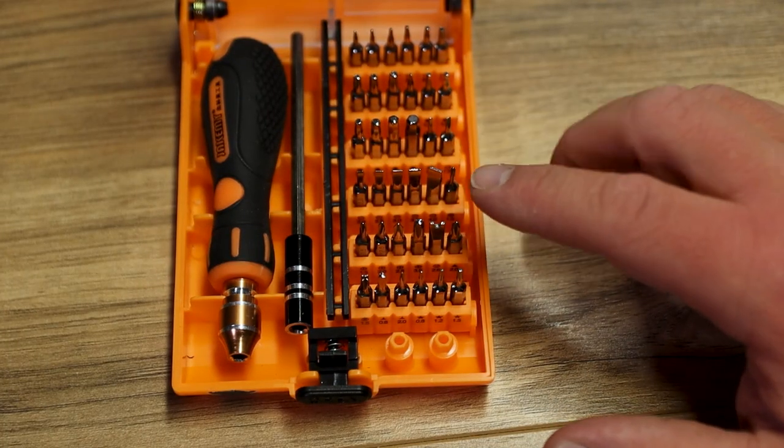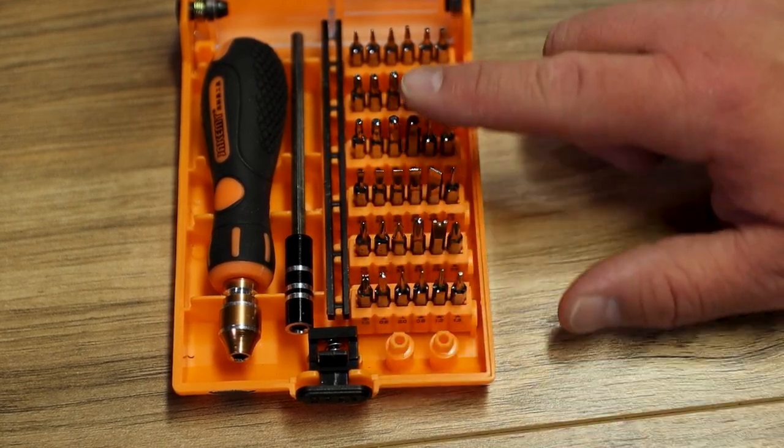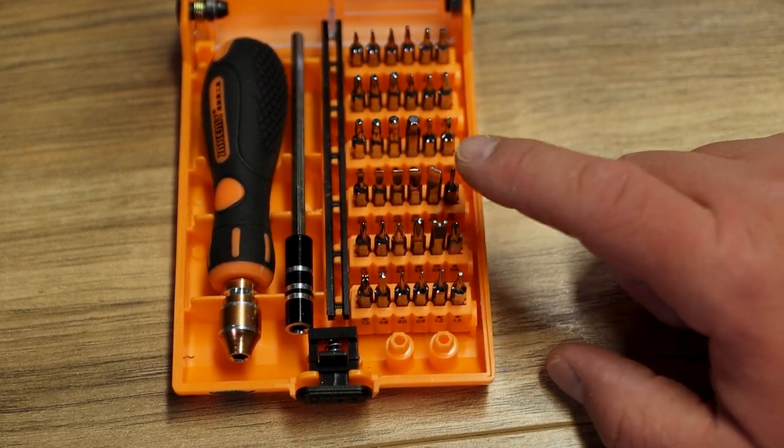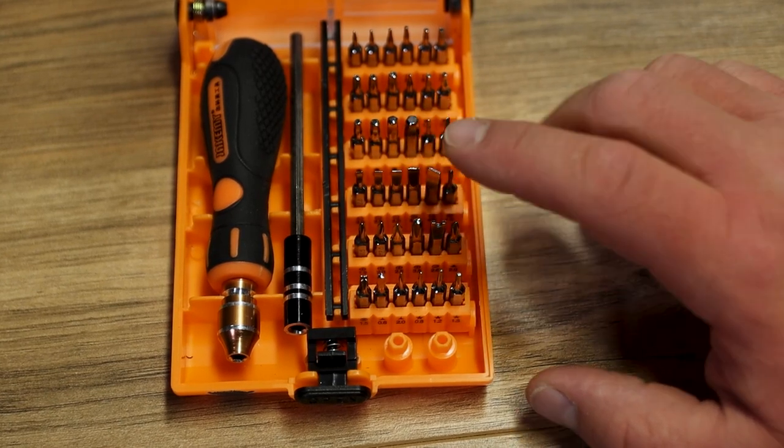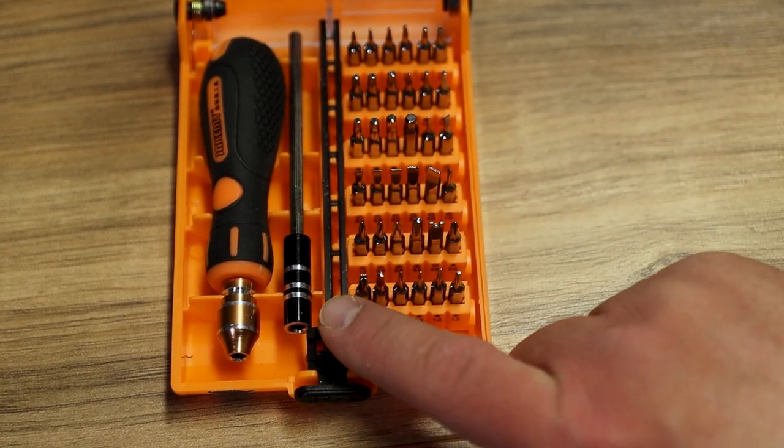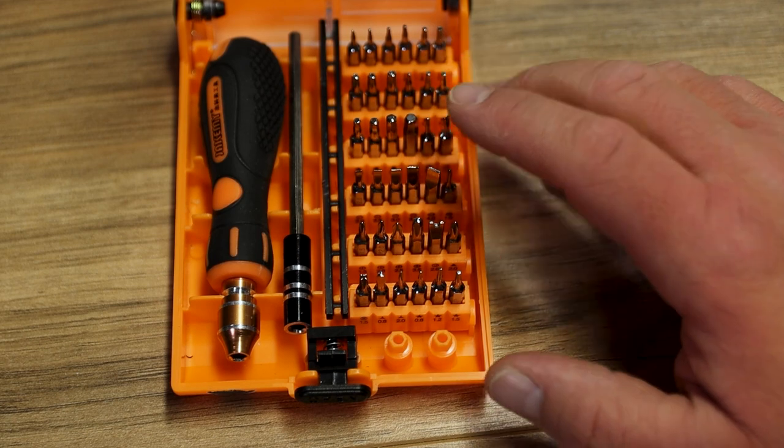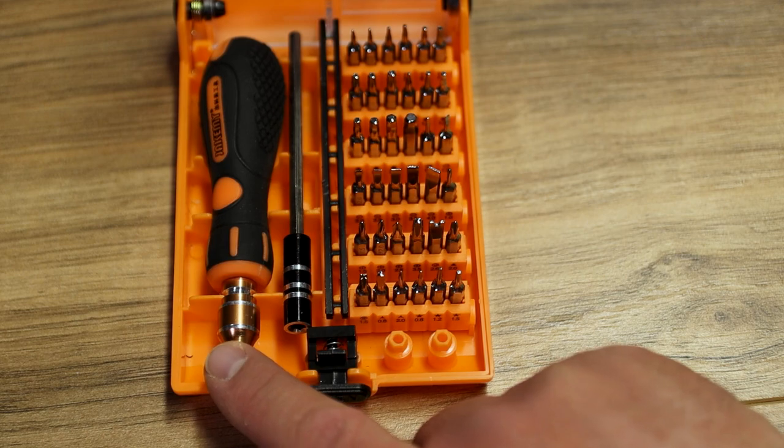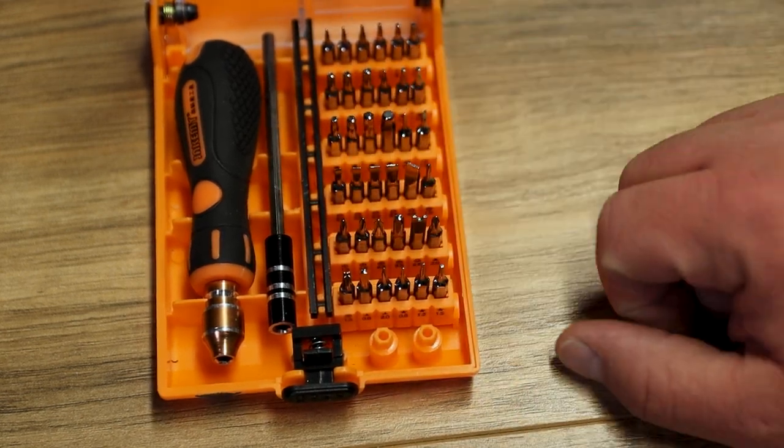Something else to consider as you go forward is maybe a bit driver set like this. This has all the different bits from Allen to Star to Flathead to Phillips. Everything you're gonna need and these kits are very cheap. This is actually not my favorite set because this piece keeps popping off and it bothers me. But a set like this will definitely help you in the future. It can definitely make it easier with the screwdriver style instead of the little tiny screwdriver that comes with the kit. But it's really cool to have all these different bits and you never know when you're gonna need them.